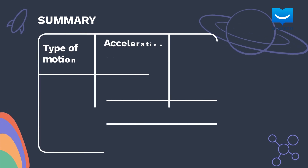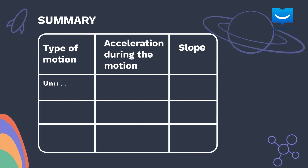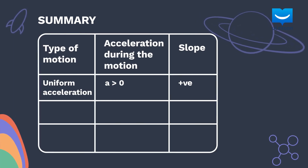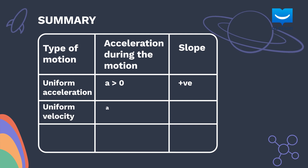So, we can summarize what we have learnt in this lesson in a table. Uniform acceleration has a positive slope. Constant velocity has zero slope. Uniform deceleration has a negative slope on the velocity-time graph.